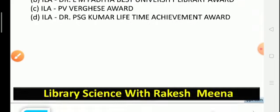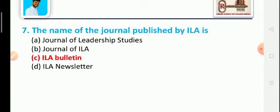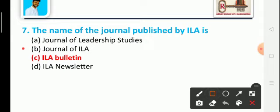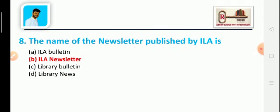Question 7: What is the name of the journal published by ILA? Option A: Journal of ILA, Option C: ILA Bulletin, Option D: ILA Newsletter. The correct answer is Option C: ILA Bulletin, which is published on a quarterly basis.